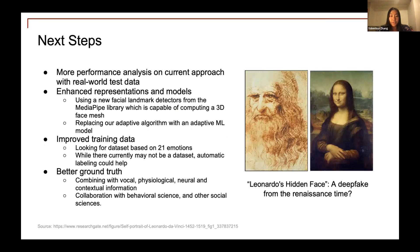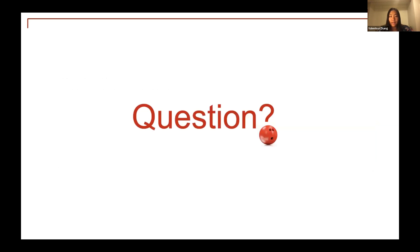As for next steps, we would like to validate our approach with more real-world data and group contexts. We also want to enhance the fidelity of our facial representations and the sophistication of our adaptive algorithm. In terms of training data, we want to experiment with fine-grained emotion models. At this point, I'm ready to take any questions. And if you can see the human face in my question mark, the fusiform and occipital face areas of your brain just got activated again.